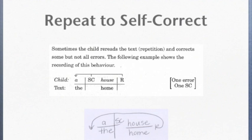If this happens, as in the example above, it is counted as one self-correct and one error. It is important to note if the self-correction was made on the repeat because it gives us insight into the child's processing.